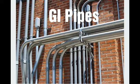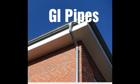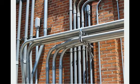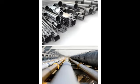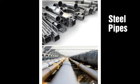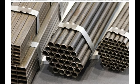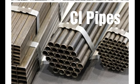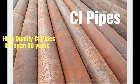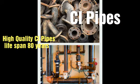Generally, pipes' life span is 40 to 50 years, and RCC and CC pipes' life span is 80 to 100 years. Cast iron pipes' life span is 80 years. High quality pipes' life span varies from 75 to 100 years.